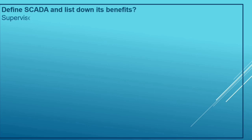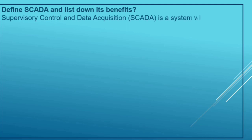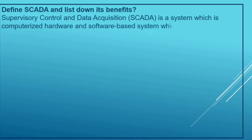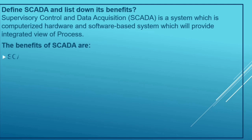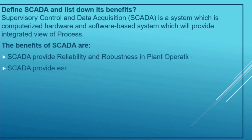Define SCADA and list down its benefits. SCADA, or Supervisory Control and Data Acquisition, is a computerized hardware and software based system which provides an integrated view of the process. The benefits of SCADA include: SCADA provides reliability and robustness in plant operation, and SCADA provides easy maintenance and troubleshooting.